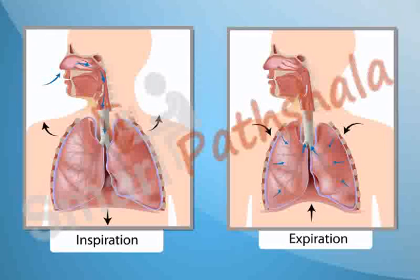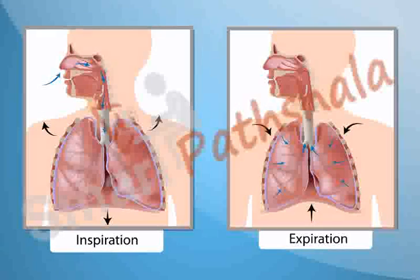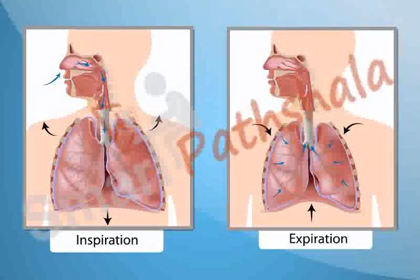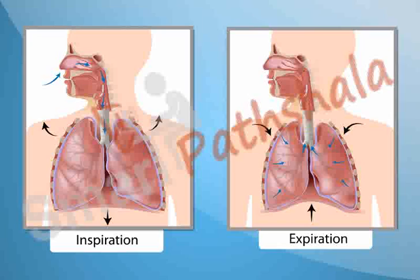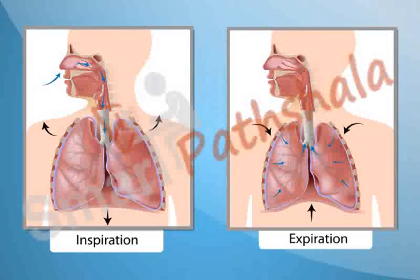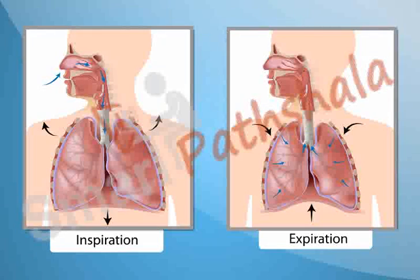Similarly, the skeletal system is used to move or bend our body in different directions. The skeletal system is made of several bones and joints. Generally, we can bend our body parts at certain places only, and these places are called joints. A joint is a place where two bones are joined.